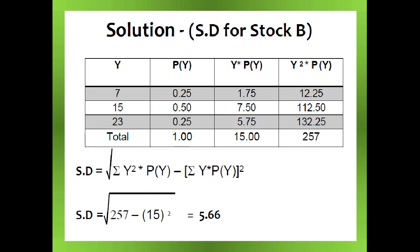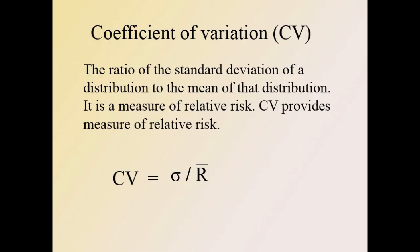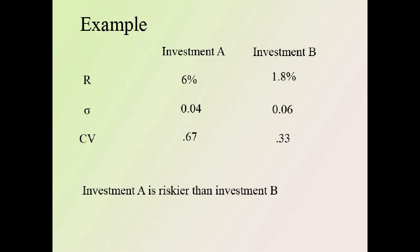Now let's see the coefficient of variation (CV). CV provides a measure of relative risk — it is the ratio of the standard deviation of a distribution to the mean of that distribution. CV is calculated by dividing the standard deviation by the mean of the expected return: CV = σ / R̄.